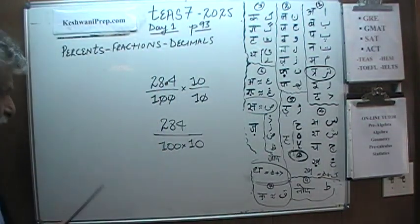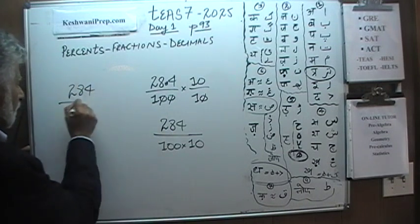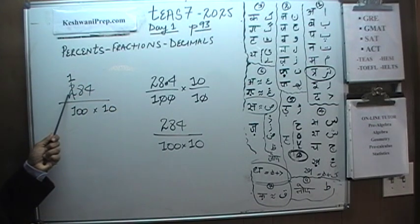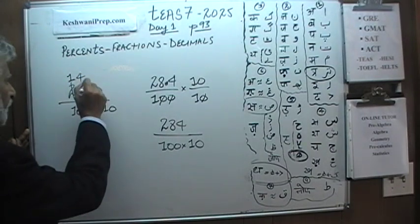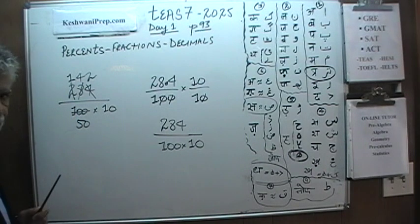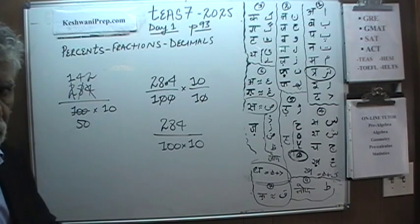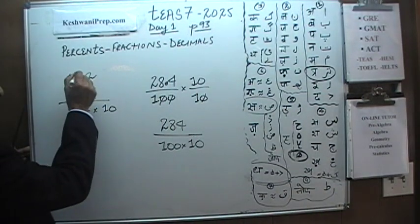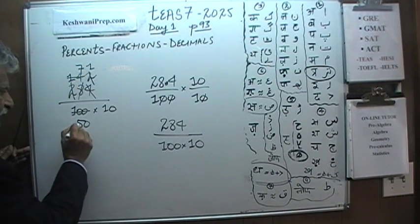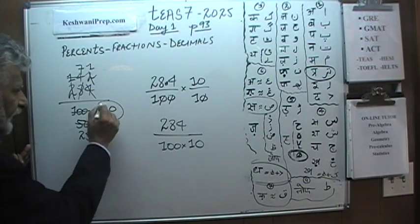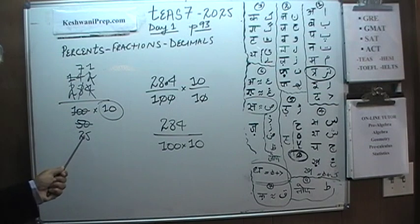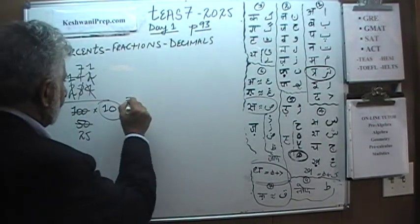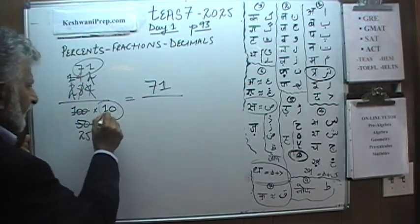Let's divide top and bottom by 2 to start. 284 divided by 2 is 142, and 1000 divided by 2 is 500. Dividing by 2 again: 142 divided by 2 is 71, and 500 divided by 2 is 250. We could have done it in one step by dividing top and bottom by 4. Either way, we end up with 71 over 250.